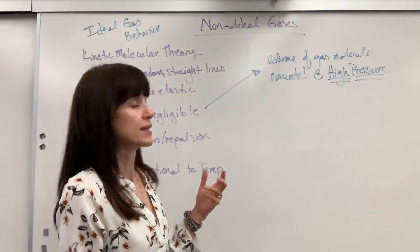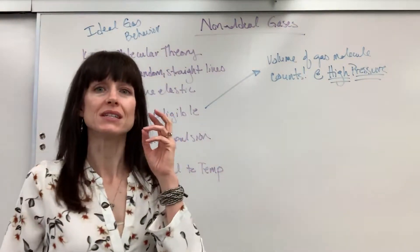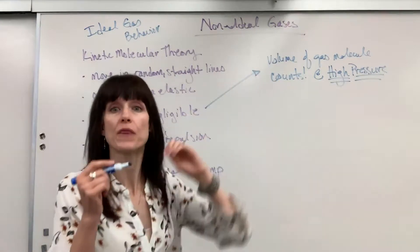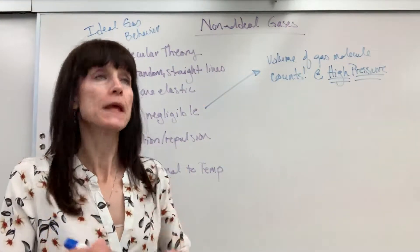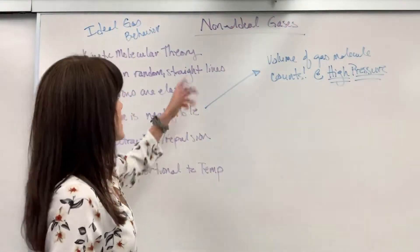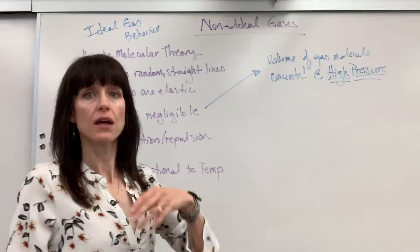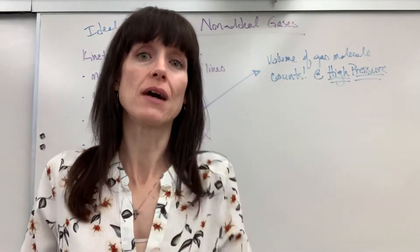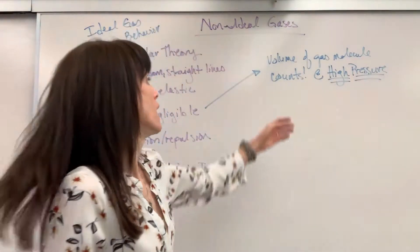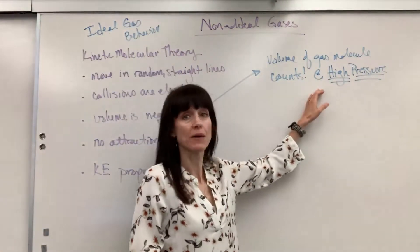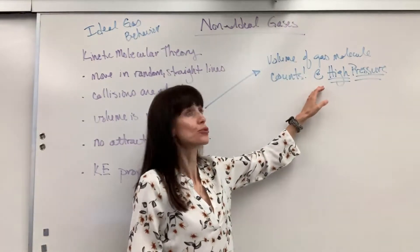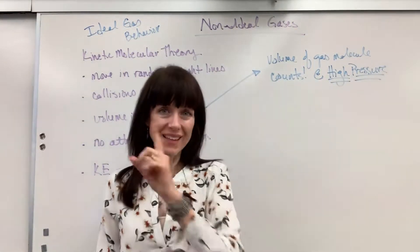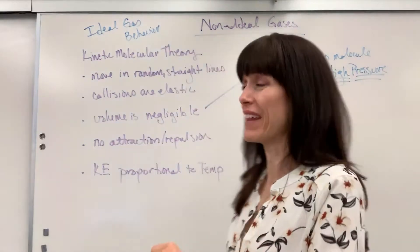When you're writing this, you always need to give both the deviation and the justification. For non-ideal gases, you would say the volume of the gas molecule counts because of the high pressure — a crazy increase in pressure. That's the first deviation.